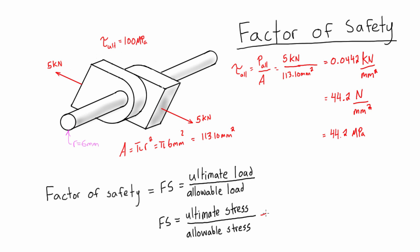And we also have our allowable stress, which is 44.2 MPa. And when we just divide 100 by 44.2, we're left with 2.26. And that is our factor of safety.